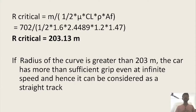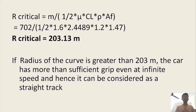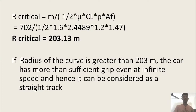Substituting the values gives a critical radius of 203.13 meters. This value depends on mu, rho, A_f, C_N, and C_L - values specific to the particular car. For this example car, the critical radius is 203 meters. If the radius of the curve is greater than 203 meters, the car has more than sufficient grip even at infinite speed and hence it can be considered as a straight track. We have now covered all the different curve cases that can be expected when driving around the circuit.